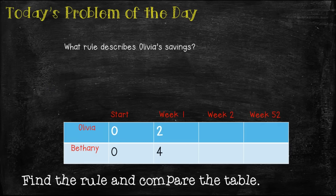So in this case, what rule describes Olivia's savings? We know she started off in week one with $0 and then in week one, she has $2. So what rule describes her savings? Well, add two. To get from zero to two, we added two.